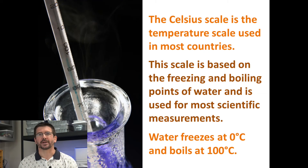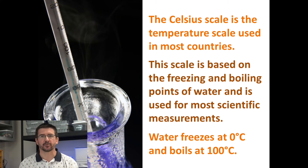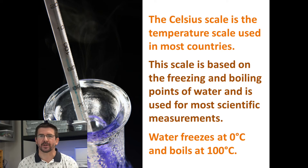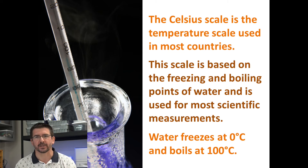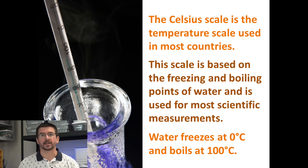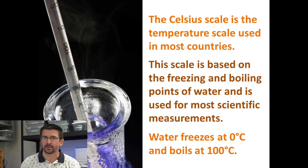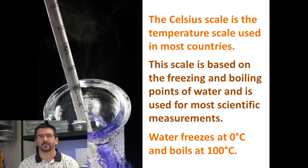A second temperature scale used by many countries around the world is called the Celsius scale. If you look at a thermometer with two sets of numbers, it'll usually have an 'F' for Fahrenheit and a 'C' for Celsius. In many countries, things like weather, cooking, and everyday temperature are measured using the Celsius scale.